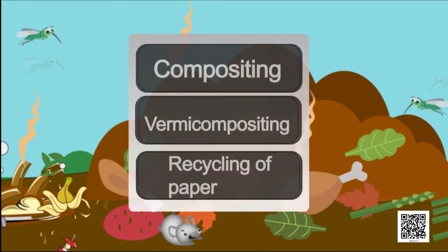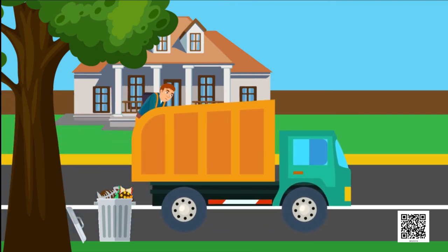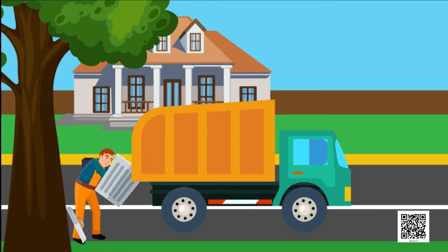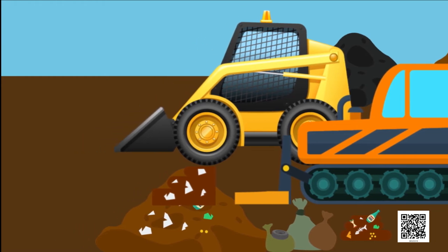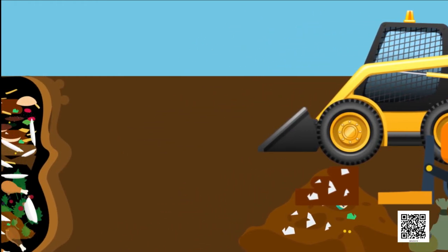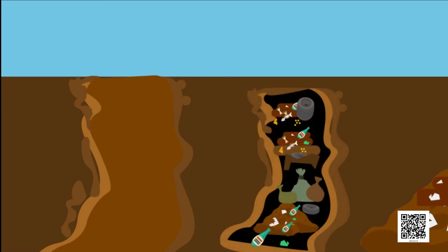Composting. Safai Karamcharis collect the garbage in trucks and take it to a low-lying open area called a landfill. Here, the garbage is separated out into useful and non-useful components. The non-useful part of the garbage is spread over the landfill and then covered with a layer of soil. To deal with the useful components of the garbage, compost-making areas are developed near the landfill. Children, do you know what is a compost?